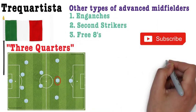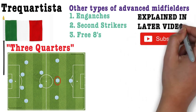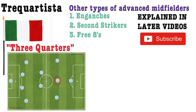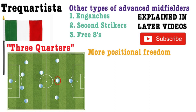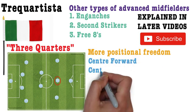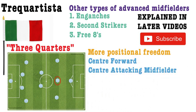The trequatista differs from these types because the player is given more freedom in the side when in possession, able to roam wherever the space may be — whether that be out wide, in between the two centre backs, in the half spaces or directly behind the striker. The trequatista can be a natural centre forward or a natural advanced midfielder, but in the role, in the system, he will inhabit the same positional movements, function in the team and have the same skill set.